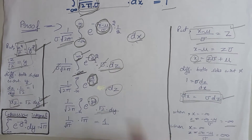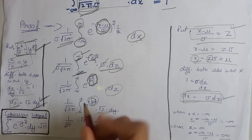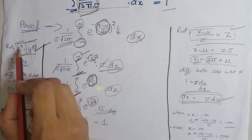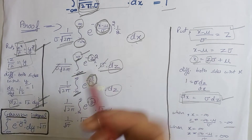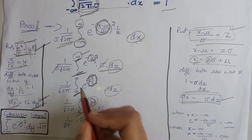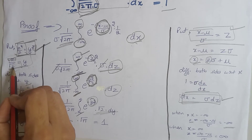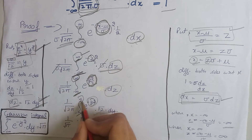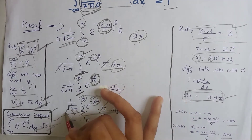Now again we will change these new limits. When the value of z is minus infinity, the value of y will be minus infinity squared divided by 2, which is again minus infinity. When the value of z is infinity, infinity divided by square root of 2 equals y, which is again infinity. So we put here only infinity. Now square root of 2 will be cancelled out by square root of 2.